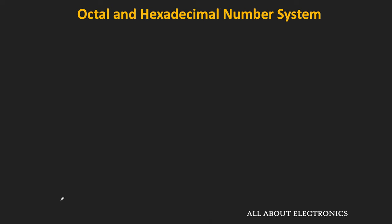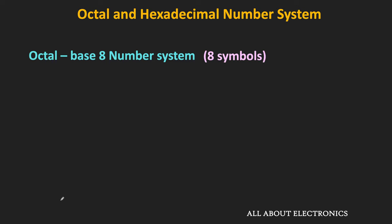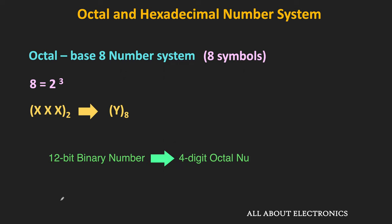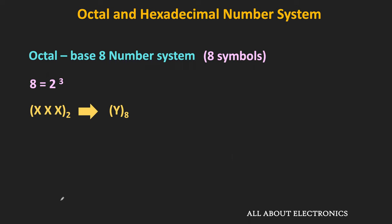The octal number system is a base 8 system consisting of 8 symbols. Since 8 equals 2 to the power 3, every 3 bits of a binary number can be represented by just 1 octal digit. So a 12-bit binary number can be represented by only 4 octal digits.